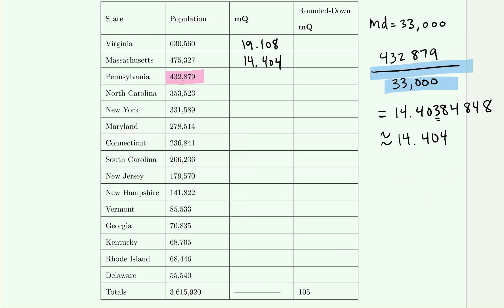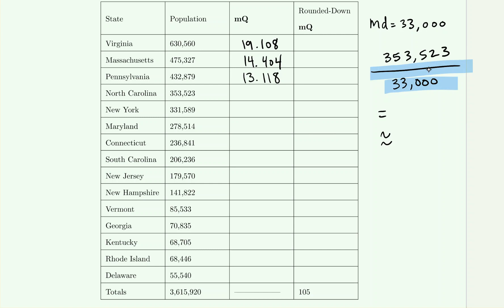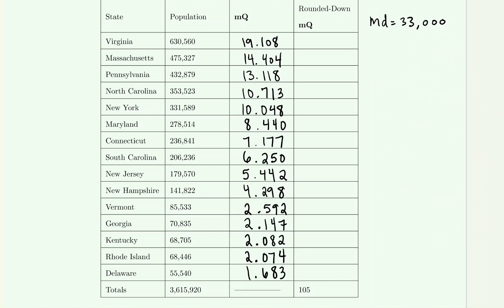For Pennsylvania, we take the category's population and divide by 33,000, which rounds to 13.118. For North Carolina, dividing by the modified divisor gives a modified quotient of 10.713 when rounded. For New York and the remaining states, we continue taking each population divided by 33,000 rounded to three decimal places, and we get the remaining MQ values shown.